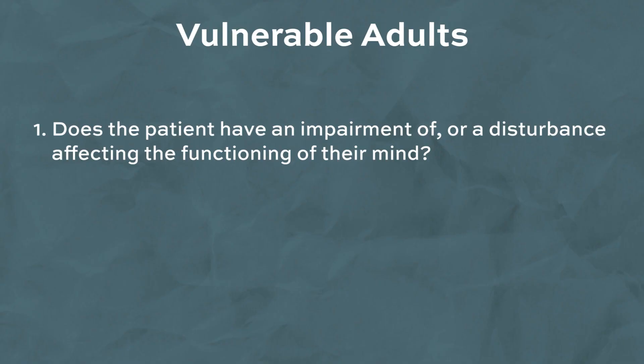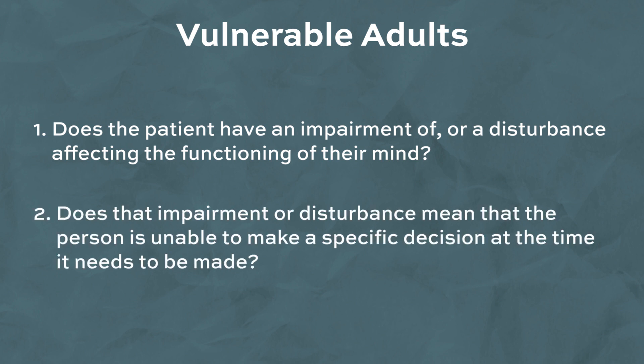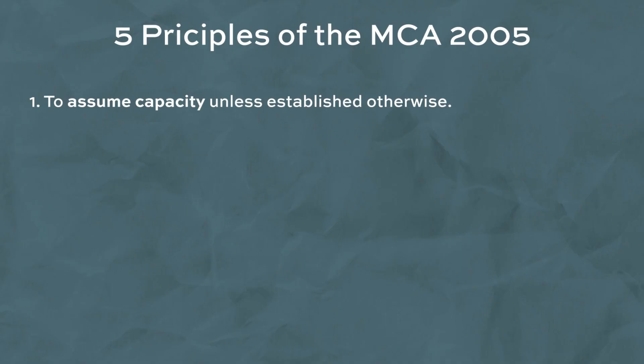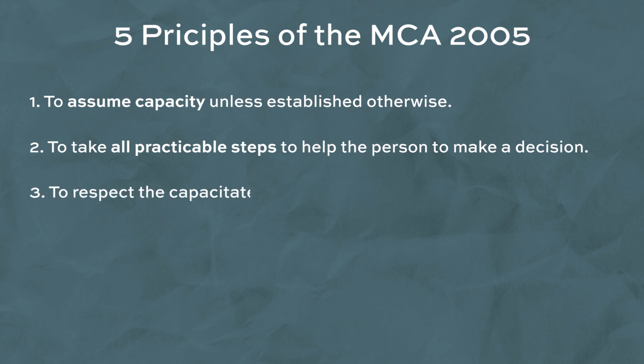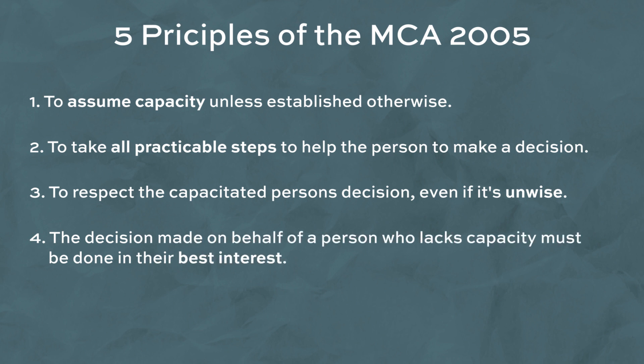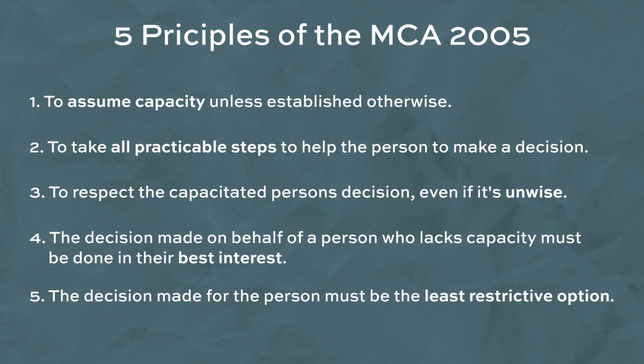Finally, I'll cover vulnerable adults. Capacity is assessed with two questions: one, does the patient have an impairment or disturbance affecting the functioning of their mind; and two, does that impairment mean the person is unable to make a specific decision at the time it needs to be made. You need to constantly reassess capacity each time a decision needs to be made, especially for patients with fluctuating capacity. If a patient may regain capacity, delay the decision-making process if possible. The five main principles of the Mental Capacity Act 2005 are: assume capacity unless established otherwise; take all practicable steps to help the person decide; respect a capacitated person's decision even if unwise; any decision made on behalf of someone who lacks capacity must be in their best interest; and the decision must be the least restrictive option.